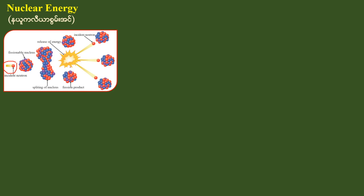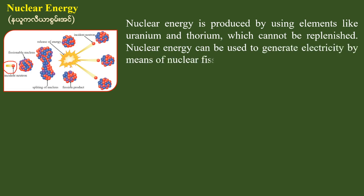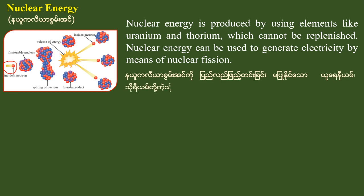The nuclear energy is produced by using elements like uranium and thorium, which cannot be replenished. The nuclear energy can be used to generate electricity by means of nuclear fission.